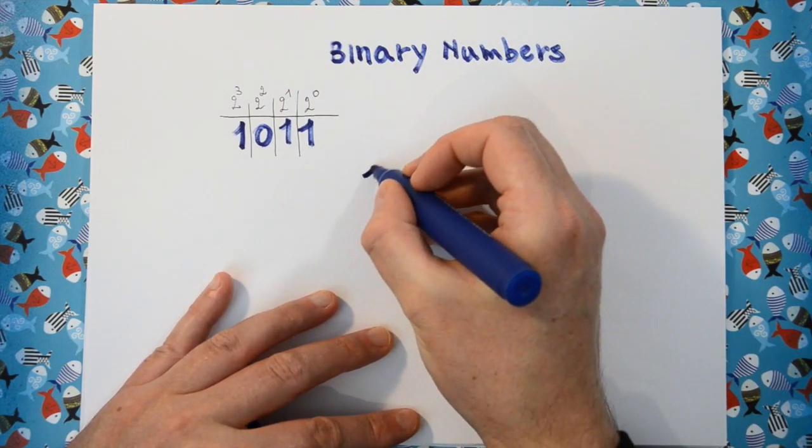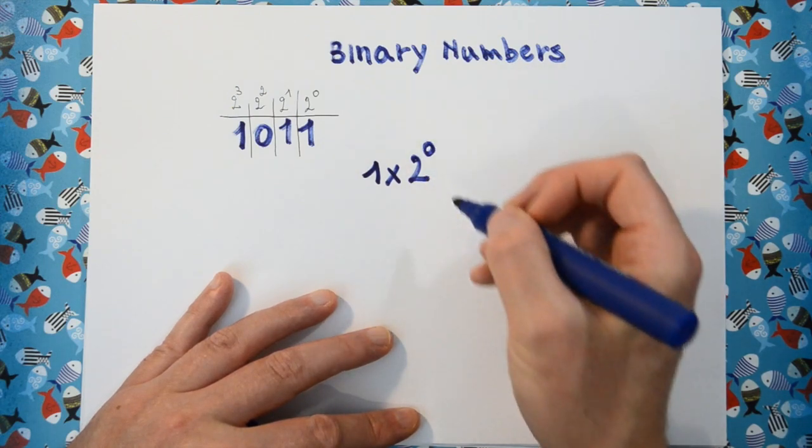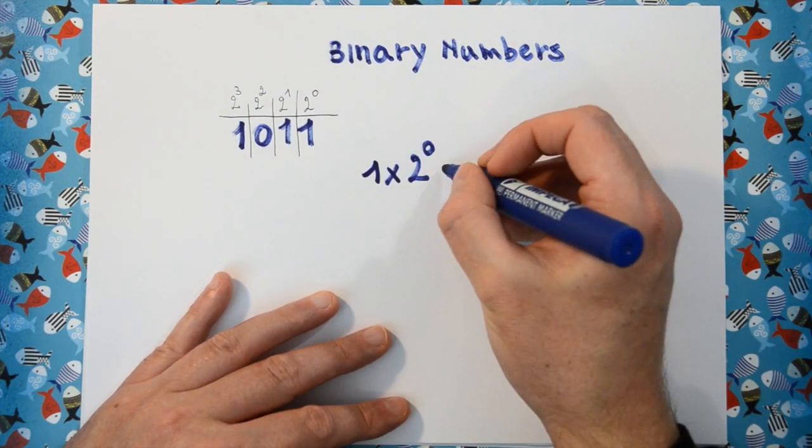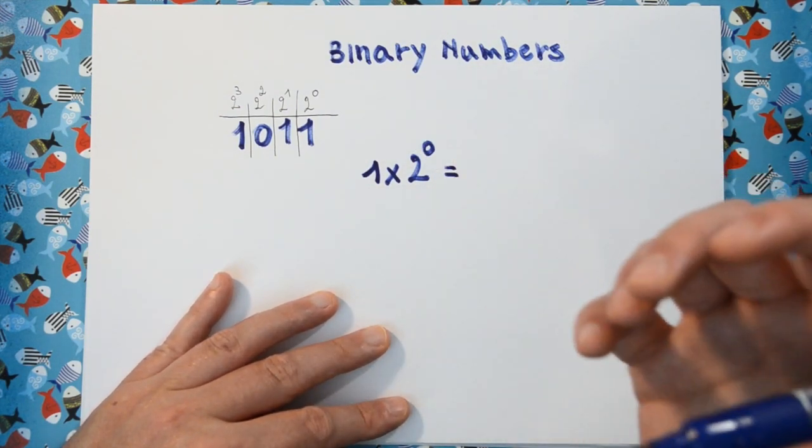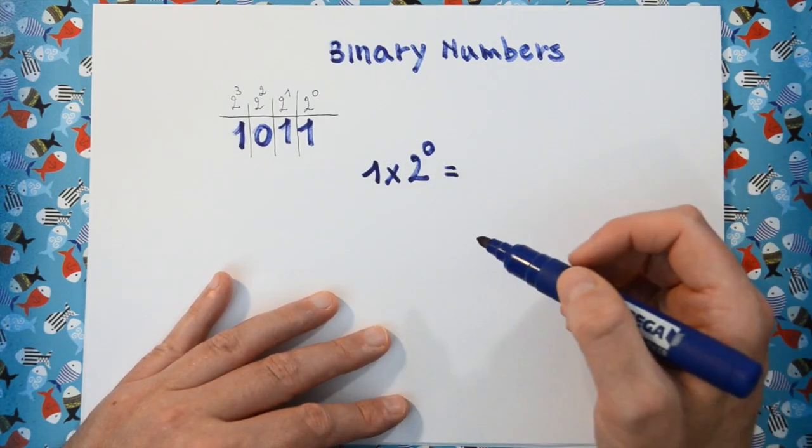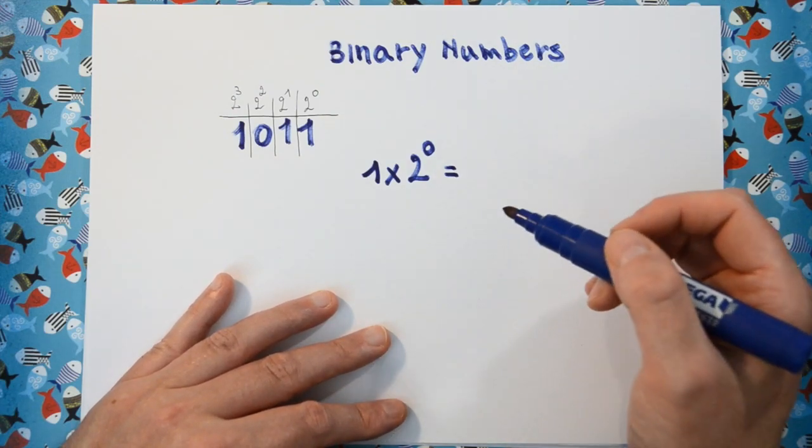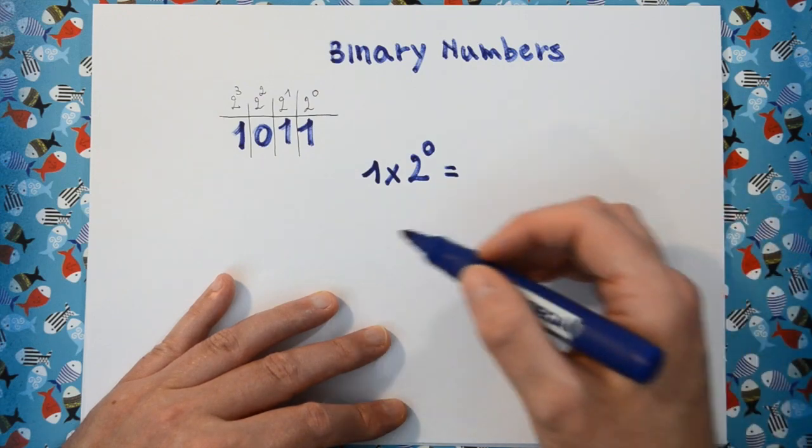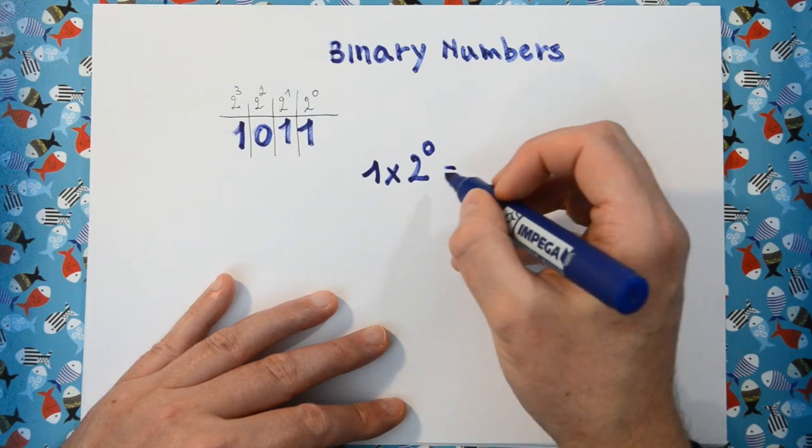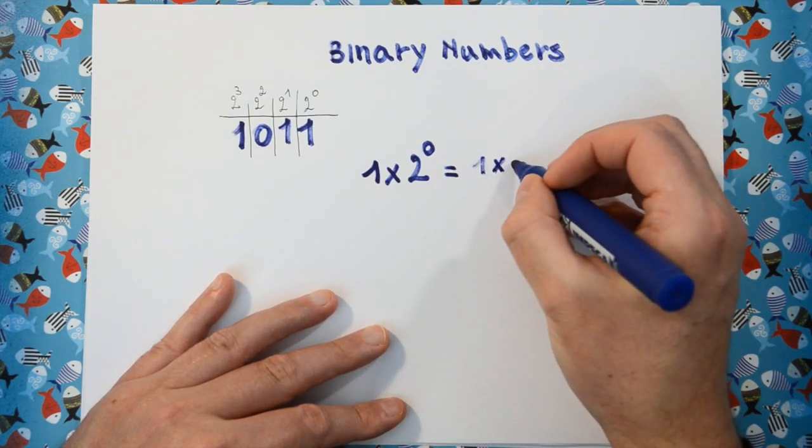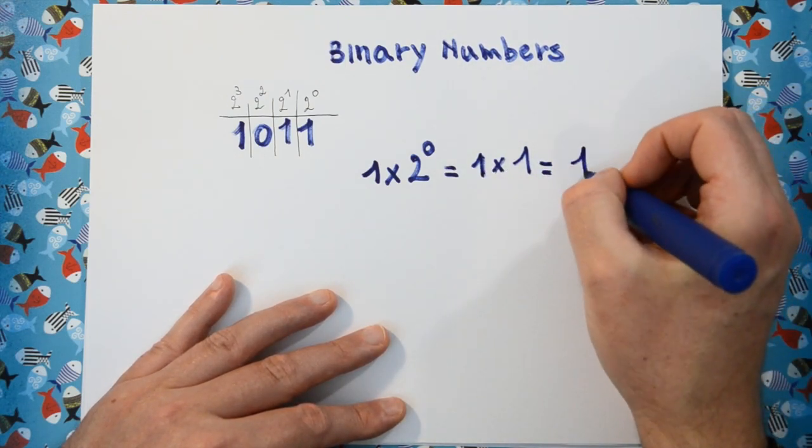This amount is 1. So we have 1 times 2 to the power 0. And any number that we raise to a power of 0 is always 1. This goes for 2 to the power of 0, but 10 to the power 0 is also 1. 415 to the power 0 is 1. Everything to the power 0 is always 1. So we have 1 times 1, which equals 1.